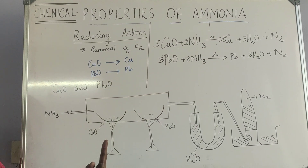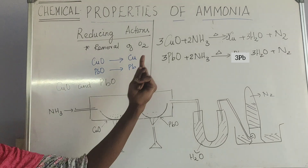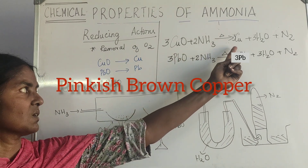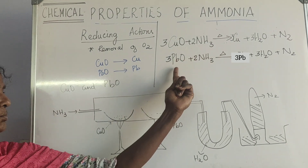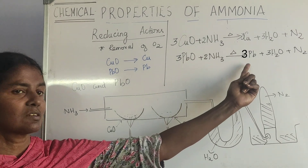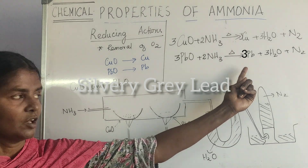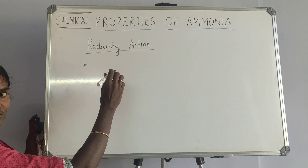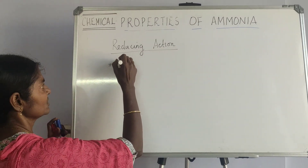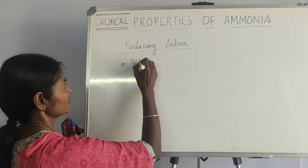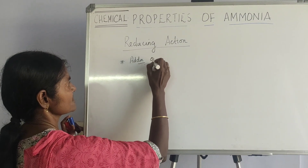The observations are: black copper oxide becomes pinkish brown copper metal; buff yellow lead oxide becomes silvery grey lead metal. Now we move on to the next set of reactions — the reducing action continues with the addition of hydrogen.